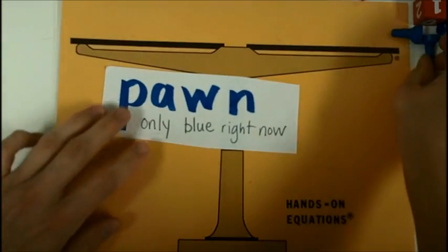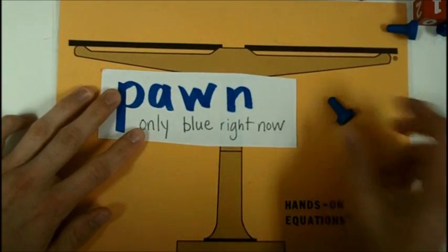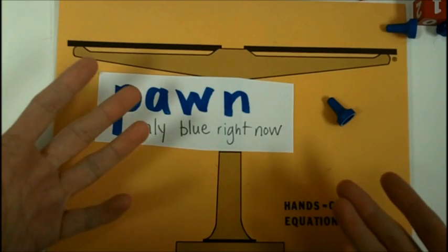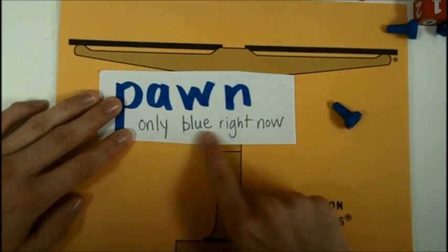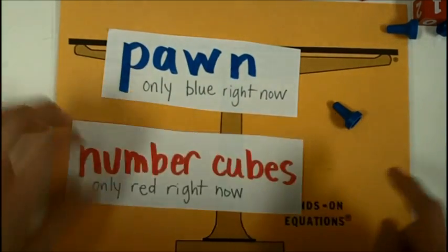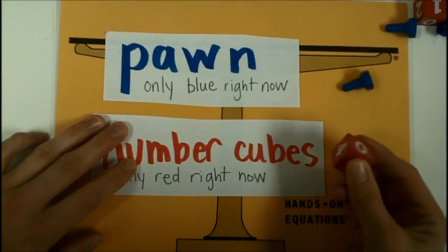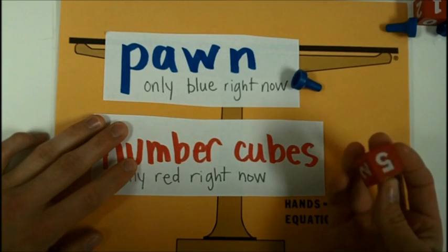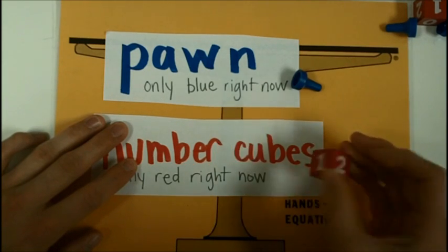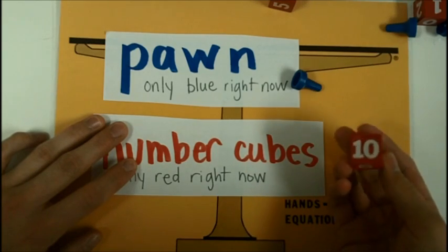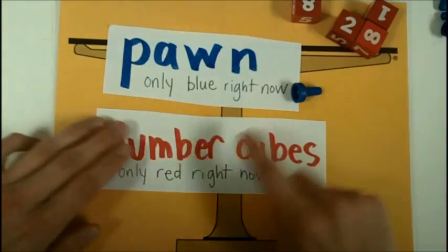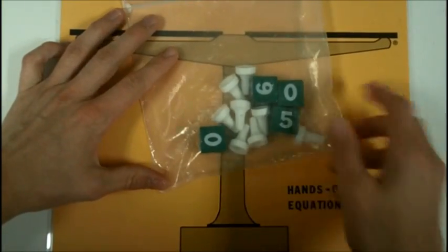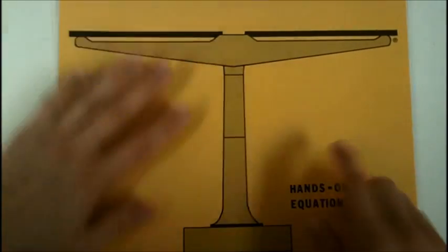Next thing you need to know is that this is called a pawn. These are called pawns, and these stand for unknown amounts. We've already seen probably the video about variables, and so this is representing a variable. For right now, we're only going to use the blue pawns. Also, these are number cubes, and you'll notice that there's a low number cube that goes 0 through 5, and then there's a high number cube that goes 6 through 10. For right now, we're only going to use the red. Let's go ahead and start.